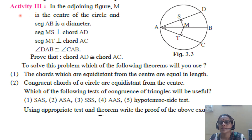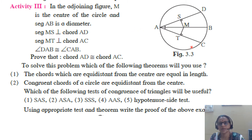Start with the next activity. M is the center of the circle. AB is the diameter. MS is perpendicular to AD. MT is perpendicular to AC. Angle DAB is congruent with angle CAB. You have to prove chord AD congruent with chord AC. Observe triangle ASM and triangle ATM. Angle DAB congruent to angle CAB means angle SAM is congruent to angle TAM.